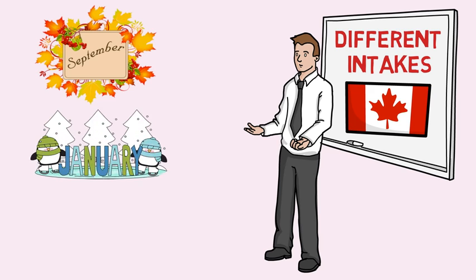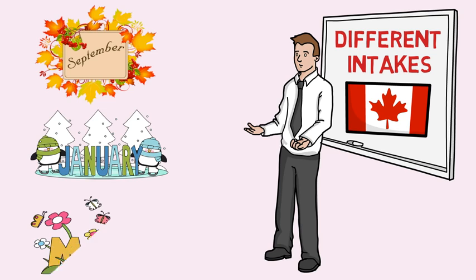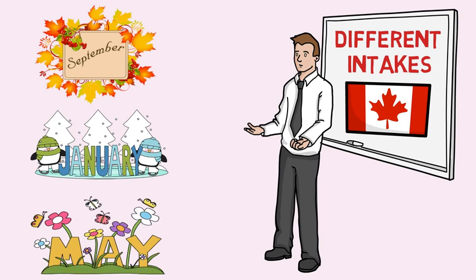The second intake starts a few months after September, in January, and it is called the January or the winter intake. This intake can be considered as a continuation of the fall intake. Fewer institutes offer courses in the winter intake compared to the fall intake — mostly students who missed fall intake opt for winter. The last one is the spring or summer intake, also known as the May intake. This is the least preferred intake, as not many colleges offer courses during this session.